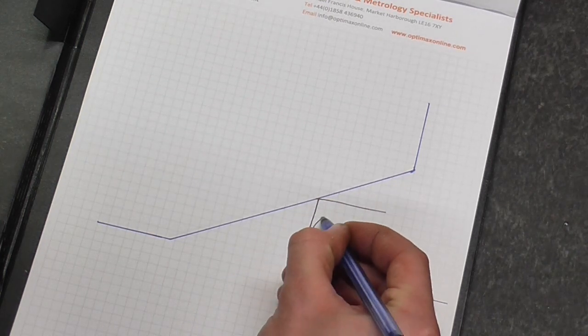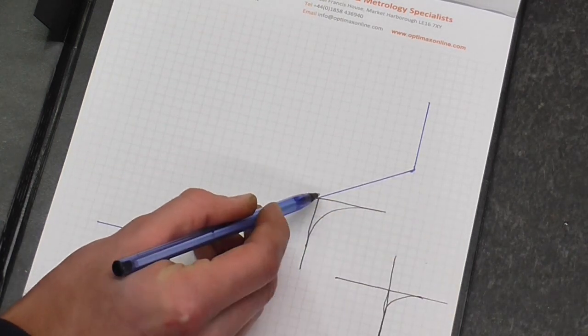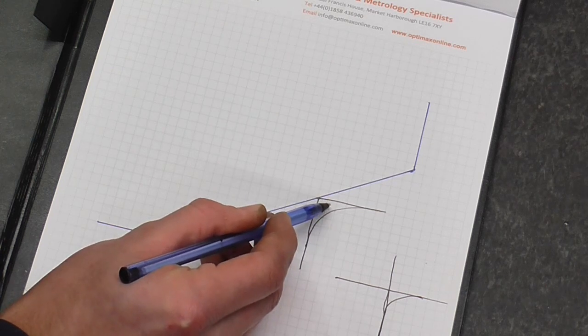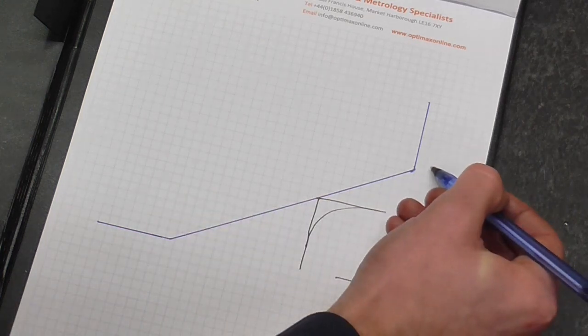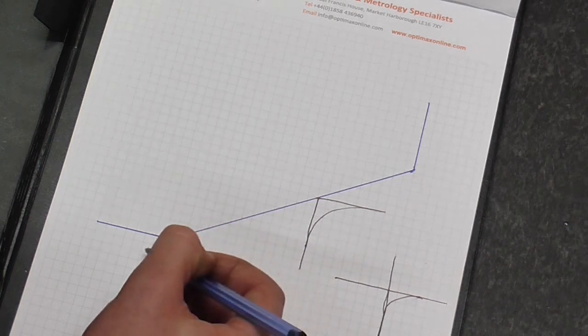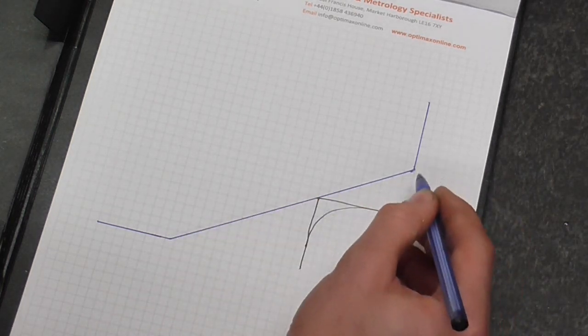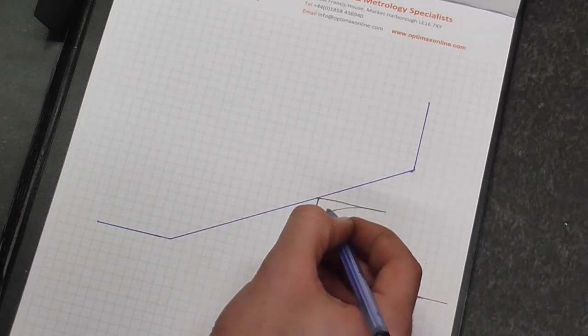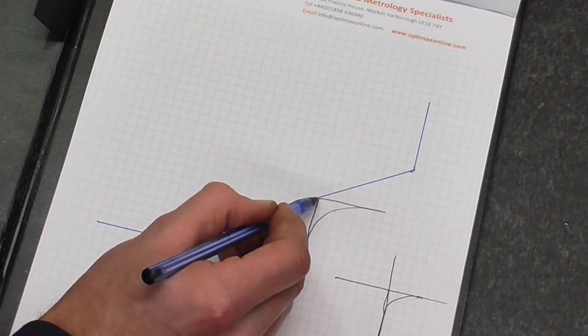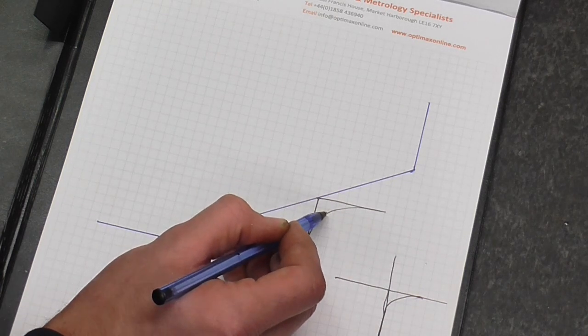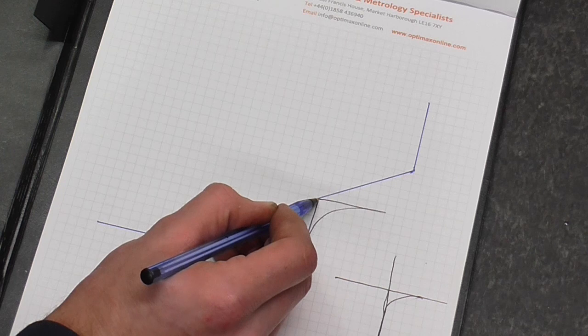But a radius tool would actually result in metal being left on. So if I traverse across here at my calculated distance 8.75 for that leg of the triangle, I'm actually going to be leaving metal on because the radius is not in the same place as that square corner.